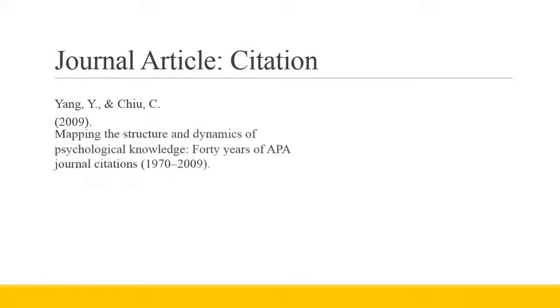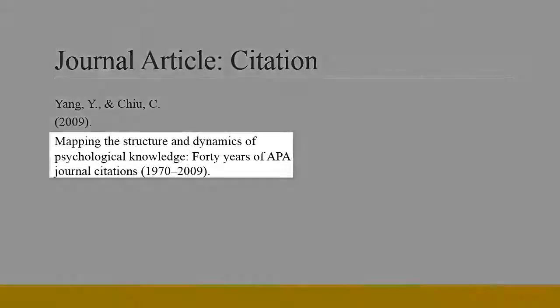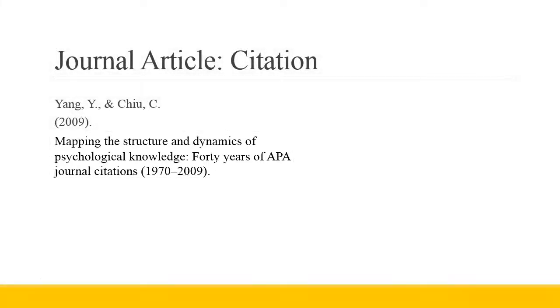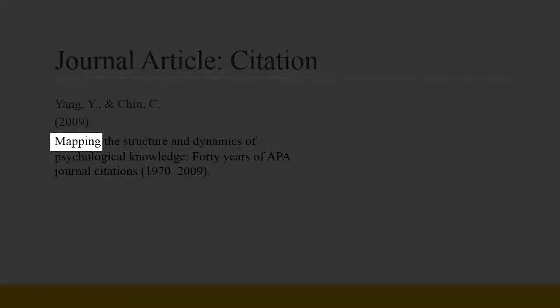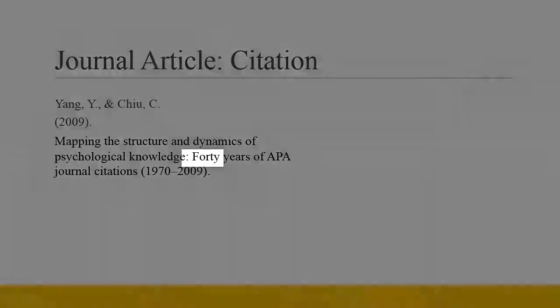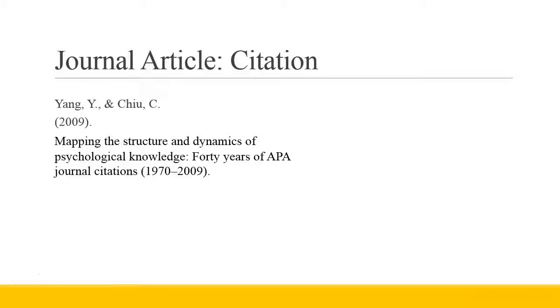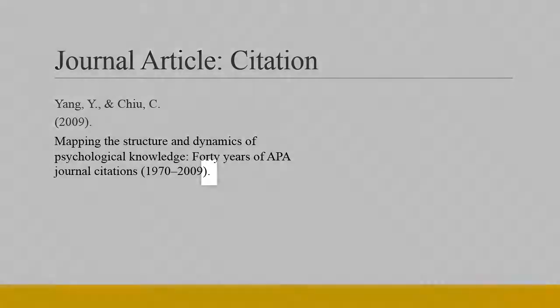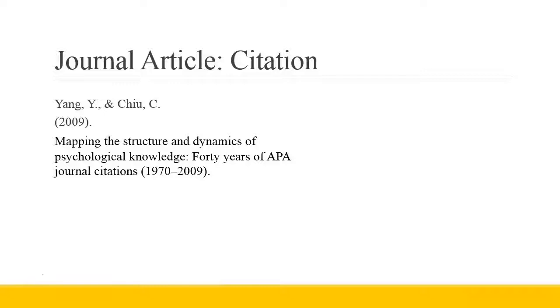The next piece of information that should be included is the title of the article. There are a few things to remember about the formatting of the title of an article in the reference list. Number one, only the first word, proper nouns, and words appearing after a colon are capitalized. Number two, the title of the article is not underlined or italicized — it is simply written in plain text. Number three, after the title, you should add a period to separate this piece of information from the next.